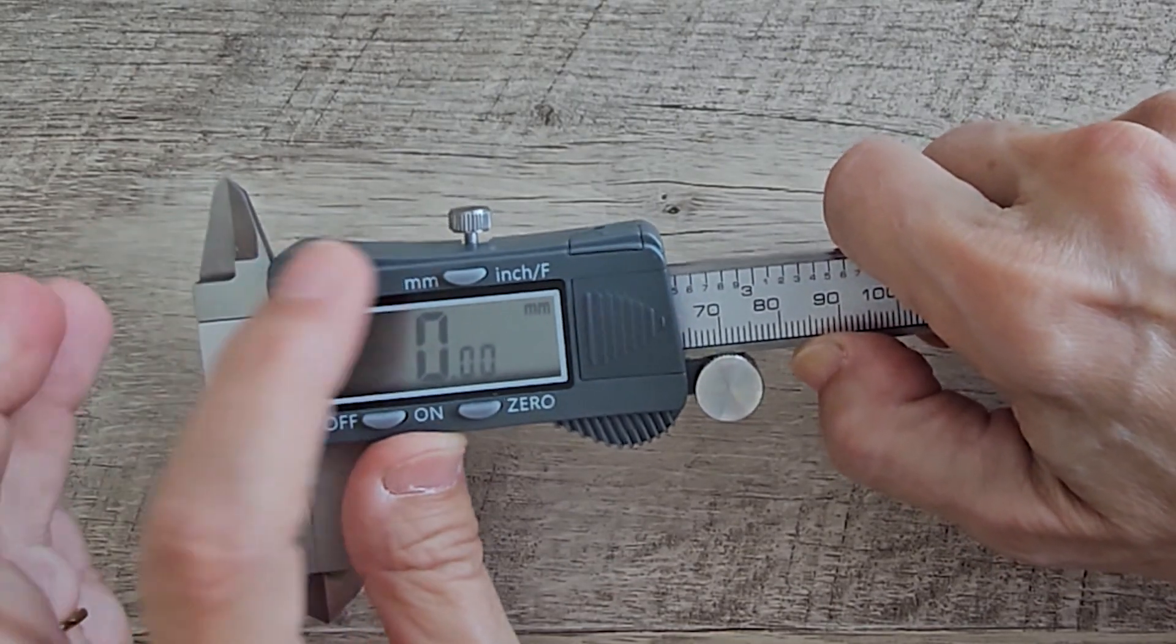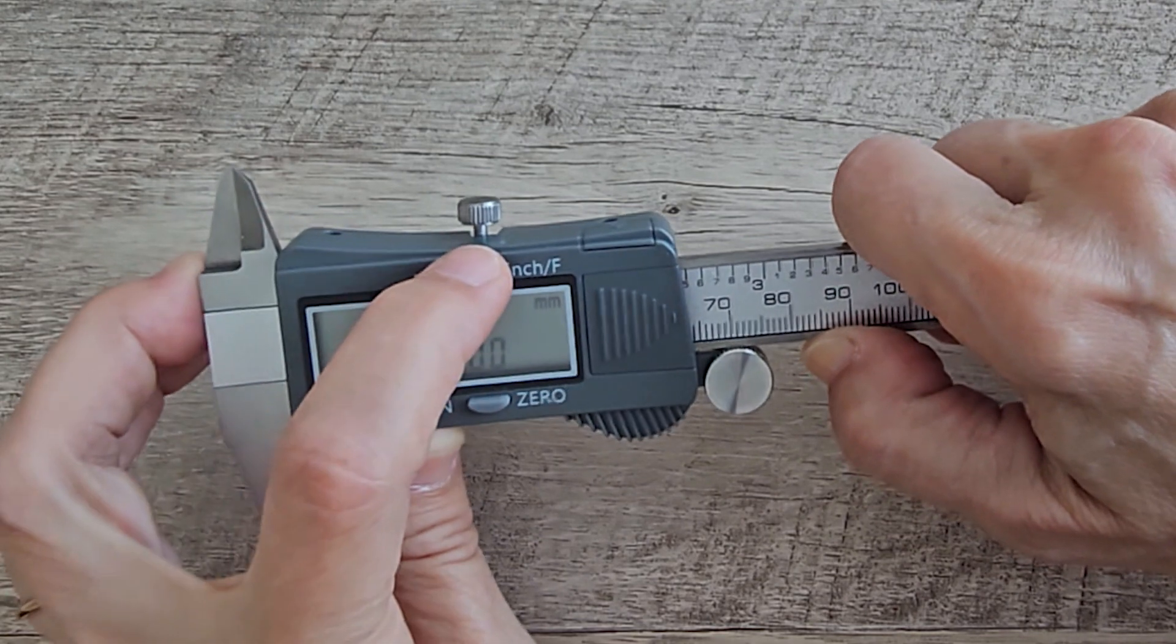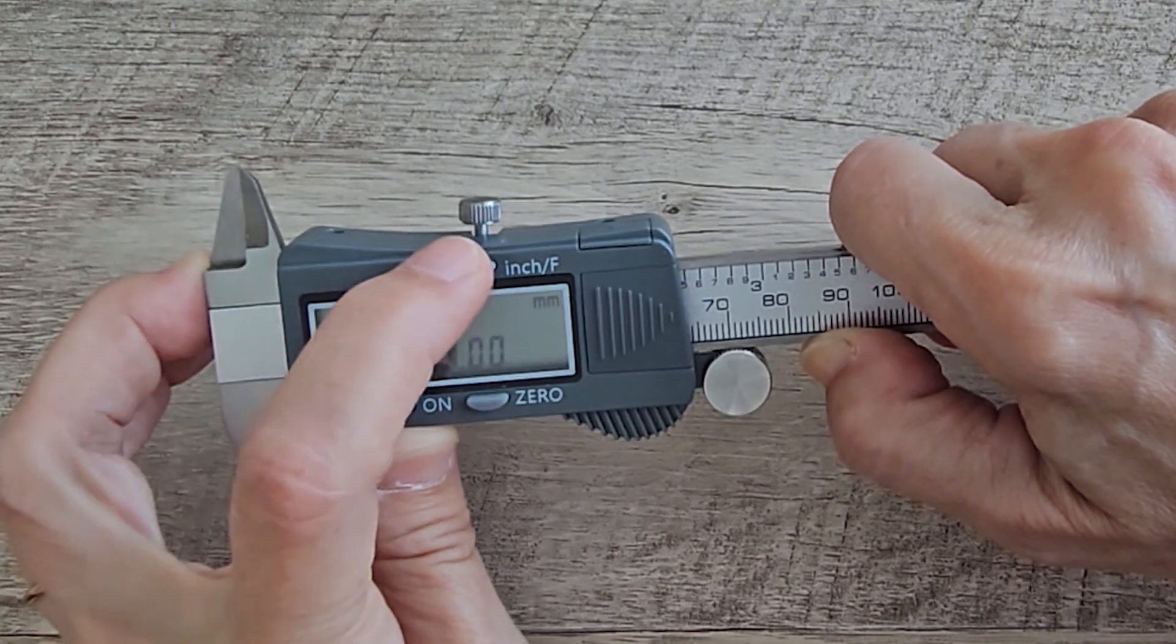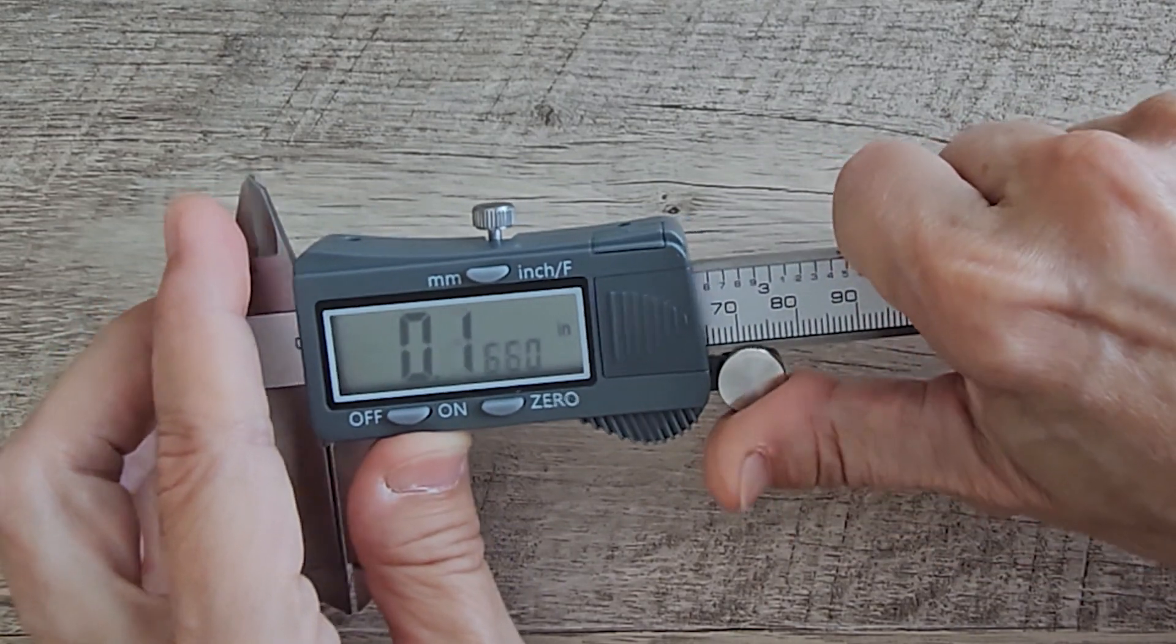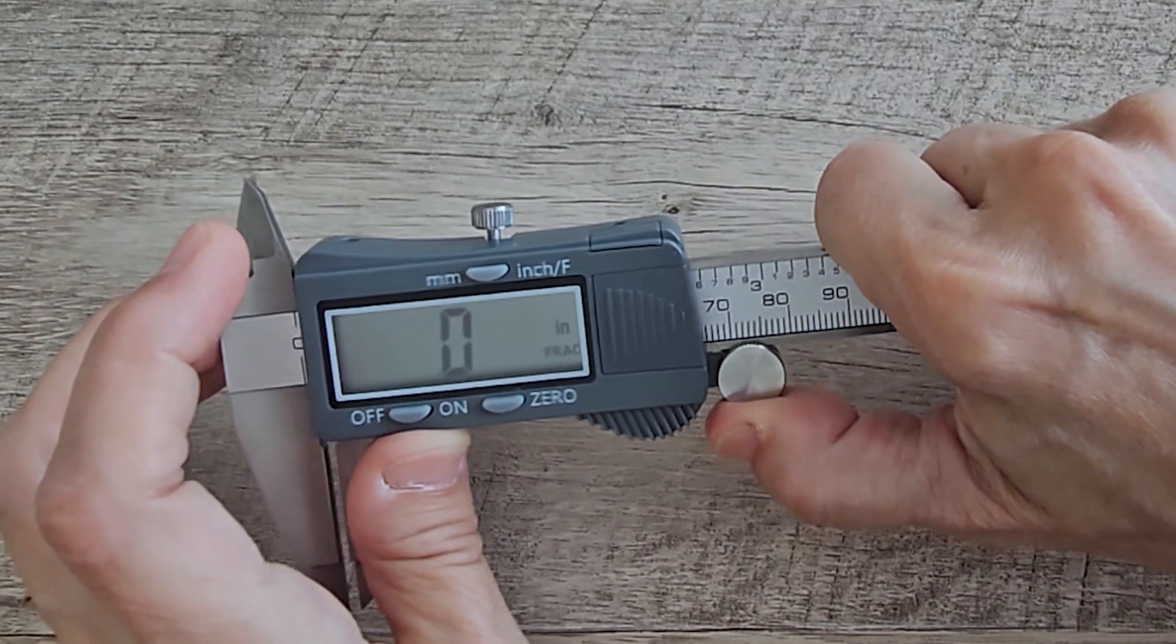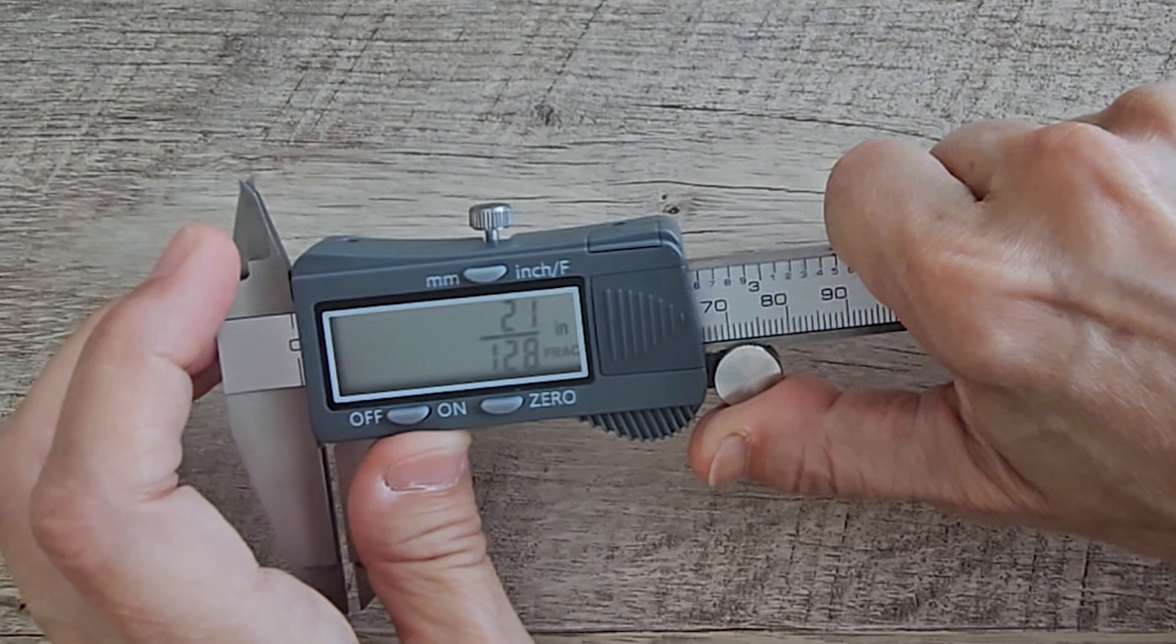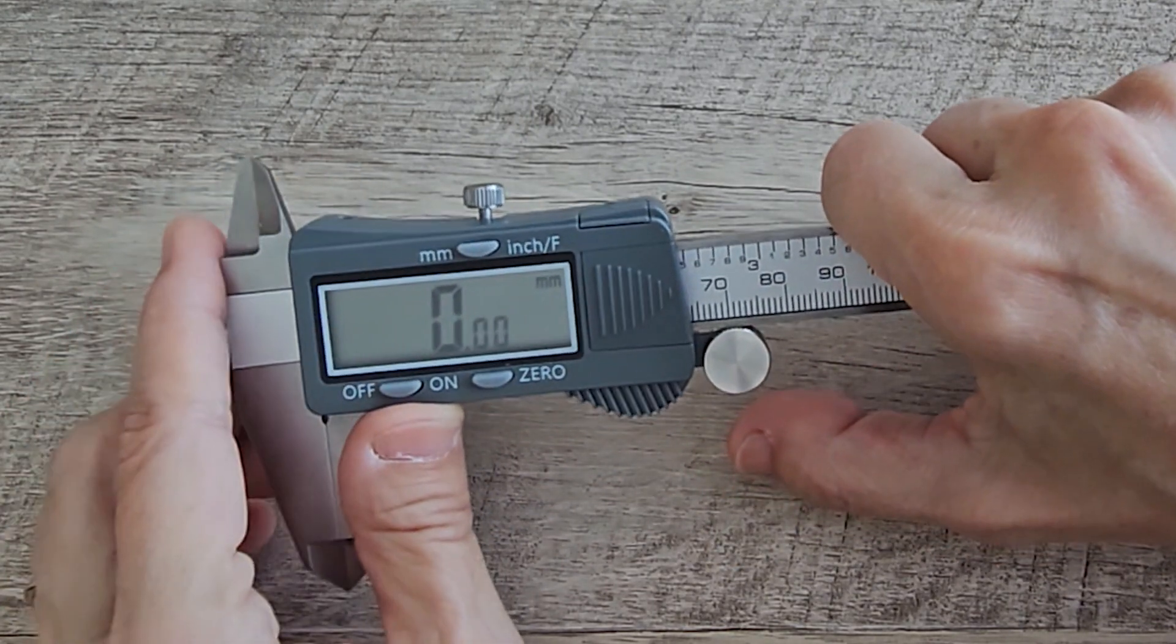Up here is where you switch from millimeters to inches. So the default is millimeters. We have inches decimal and inches fraction, and back to millimeters.